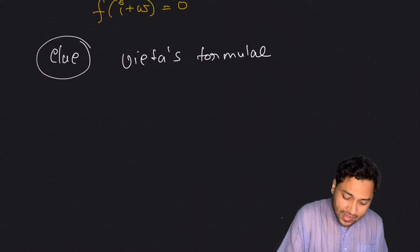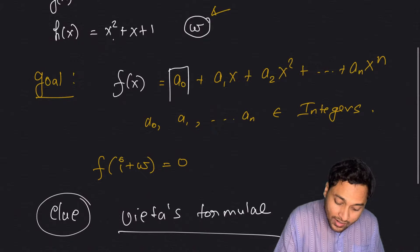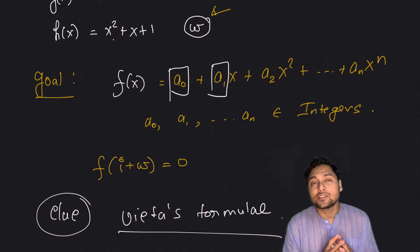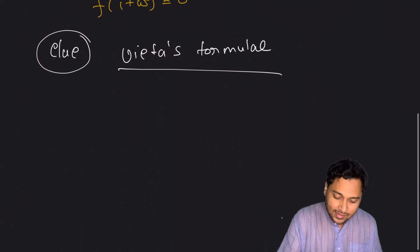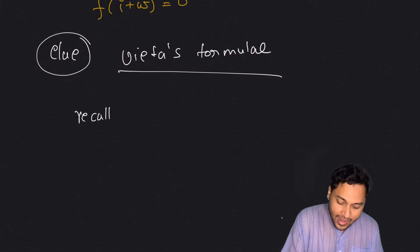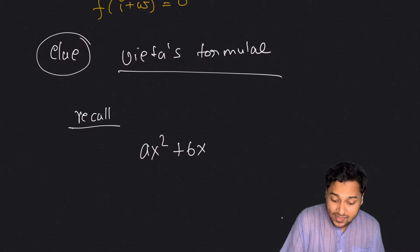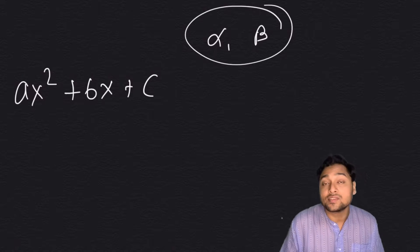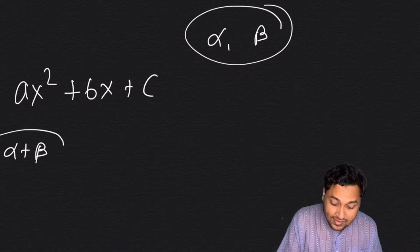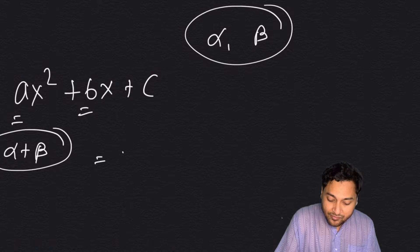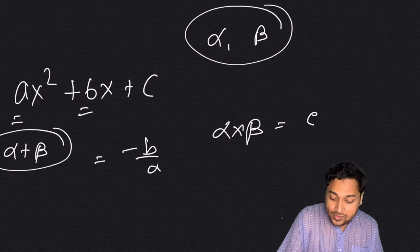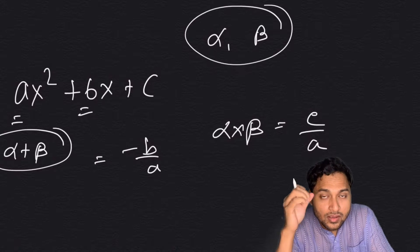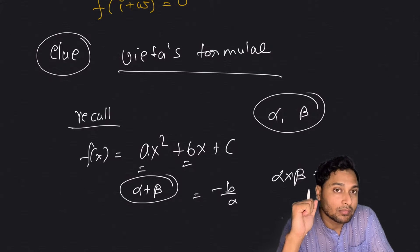Here's a clue: think about Vieta's formulas. If you have a polynomial, how are the coefficients expressed in terms of the roots? Recall that for a quadratic f(x) = ax² + bx + c, if alpha and beta are the roots, then alpha + beta equals −b/a and alpha × beta equals c/a. So it is possible to express coefficients in terms of roots — we have to use that idea to solve this problem.